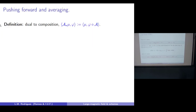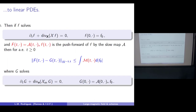This is why I insist on getting explicit dependences in the bounds: when you plug them into the density estimate, you see how many moments in velocity you lose and things like that.